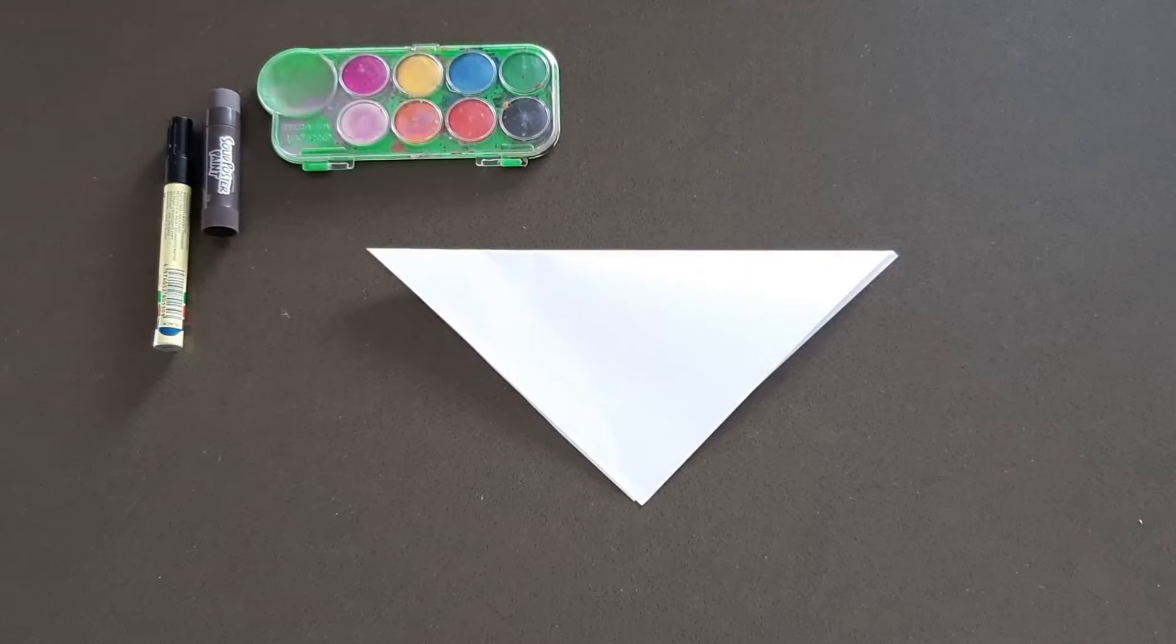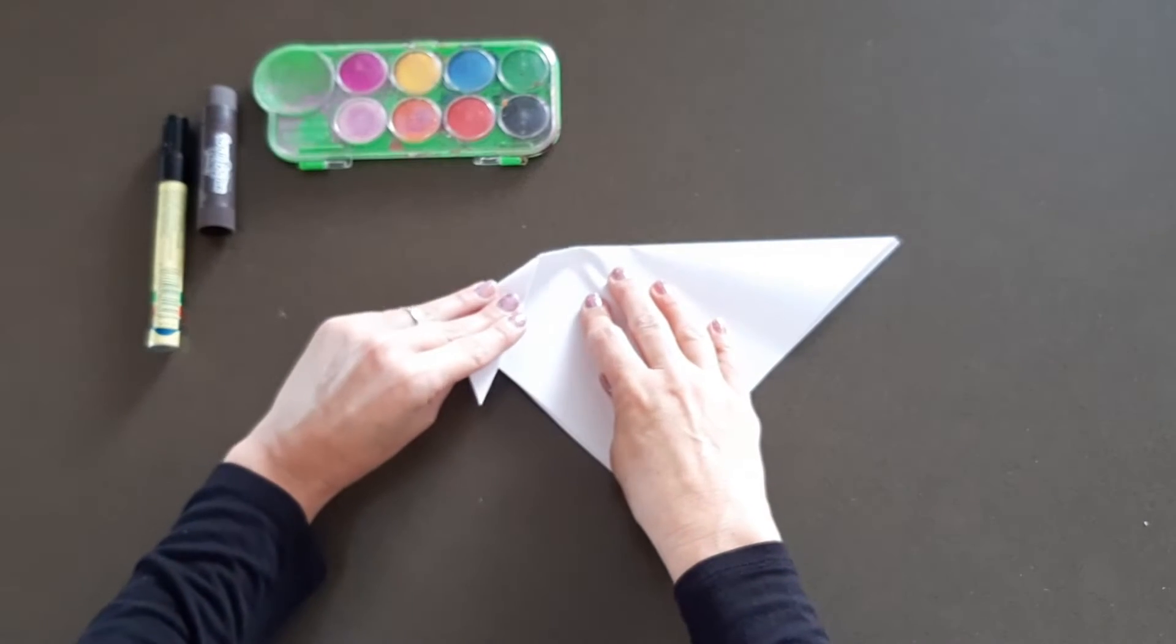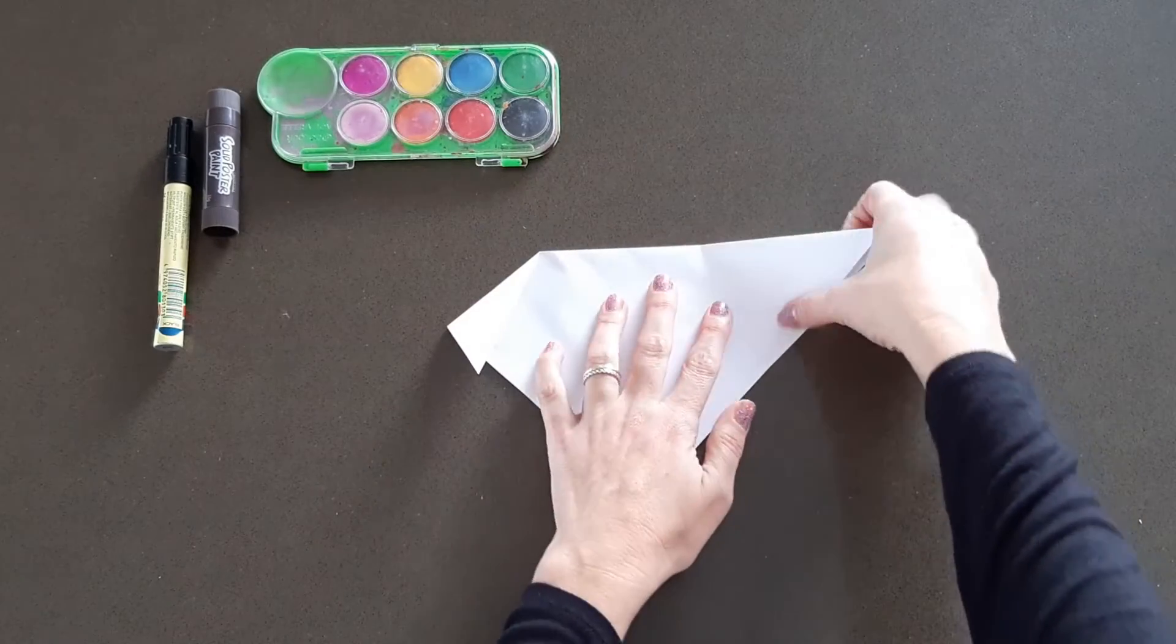To make your doggy's ears, you can fold the corners of the triangle down so that they can go over the sides.